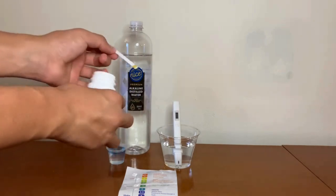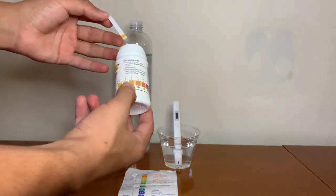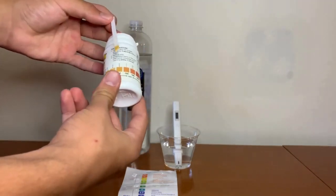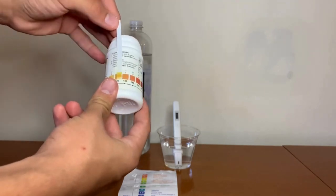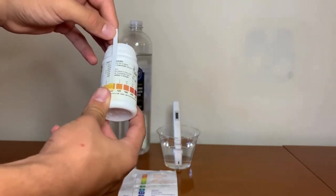Now let's compare the strip to the chart on the back. I give this an 80, which is moderately hard water.